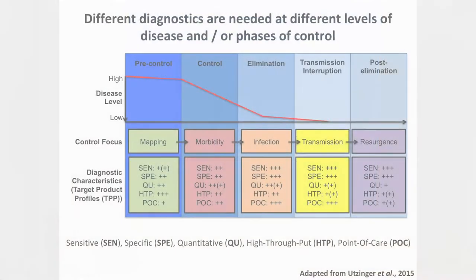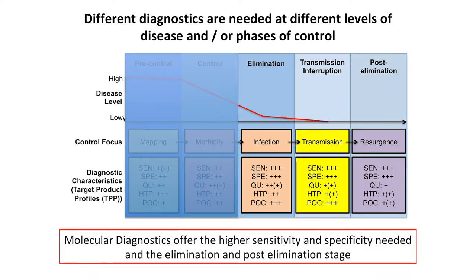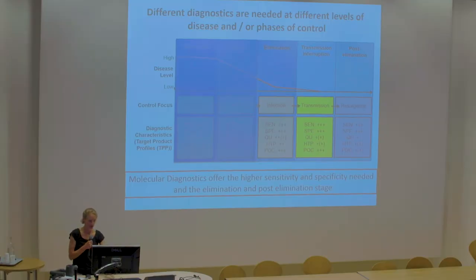We've seen this morning how diagnostics need to change as you go through different stages of control and elimination programs. As you get down to the lower end — elimination, transmission interruption, and post-elimination stages — you need to increase sensitivity and specificity of your diagnostics. Molecular diagnostics offer some of those characteristics, so we can start to think about integrating them at those stages.